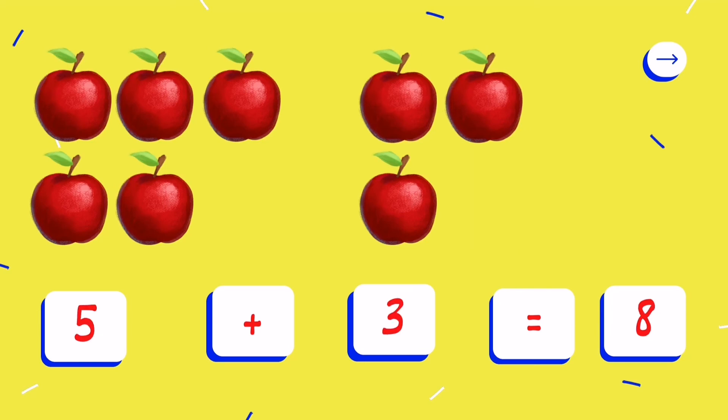How about this one? How many apples in the first group? Yes, 5 apples. How about the second group? Yes, 3 apples. That means 5 plus 3 is equal to 8 apples.